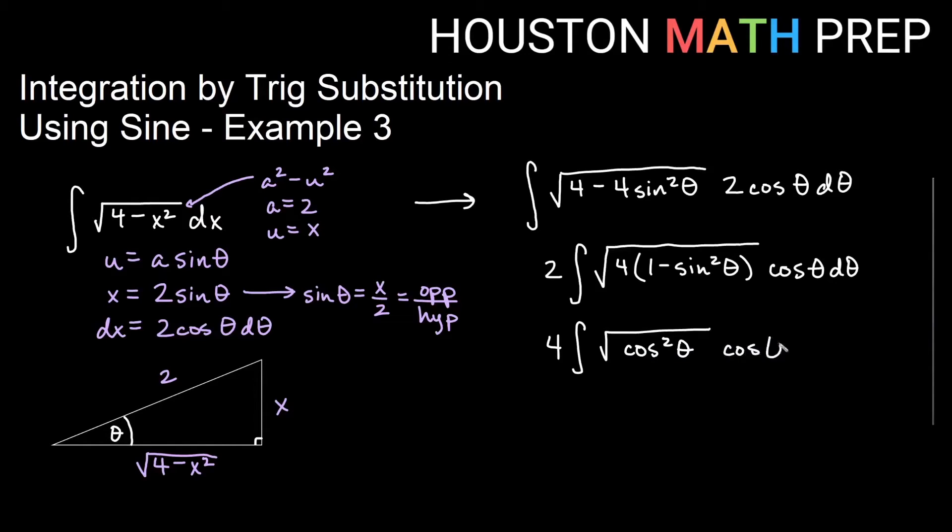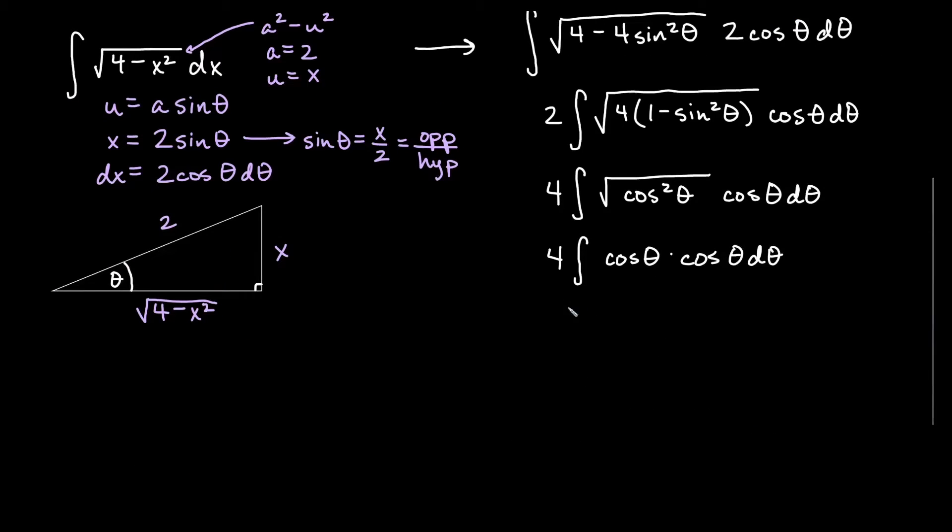I have a cosine squared theta in the root. I have a cosine theta outside. And then because we are in a right triangle and everything's in quadrant 1, I can think of this as just cosine theta. So I get cosine theta times cosine theta d theta. And of course, we will think of that as the integral of cosine squared theta d theta.